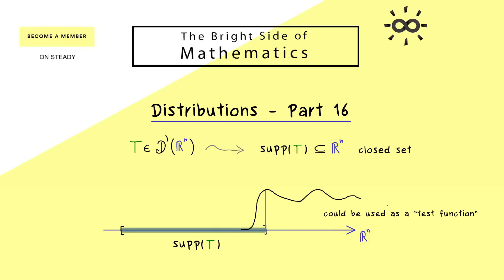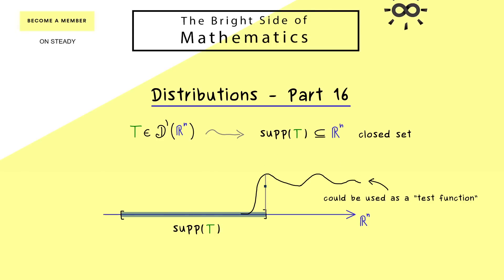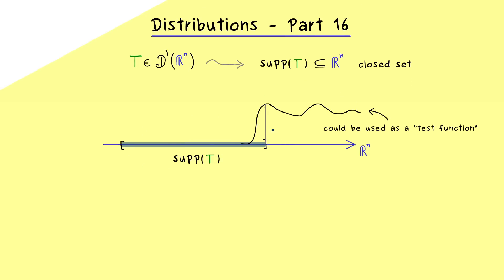This implies that we don't even need compact support for the test function we use here. This is what we mean when we say we can extend the domain of definition for distributions. However, this heavily depends on what the support of T actually is. If the support of T is the whole space R^n we cannot extend anything, but if it's a compact set in R^n we can do exactly that. So let's go to the definition of this extension.